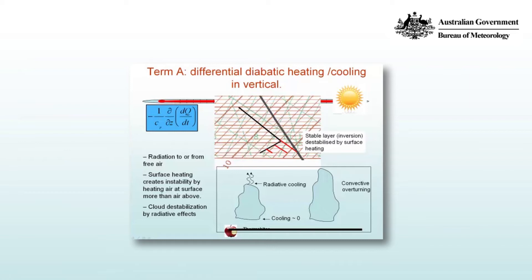So in this case, dq/dt at the base of the cloud is zero and dq/dt at the top of the cloud is negative. So again, d/dz(dq/dt) is negative.